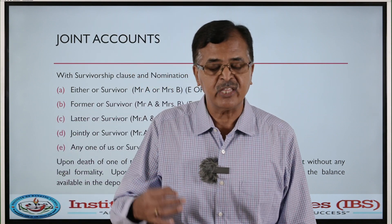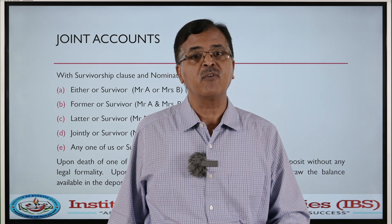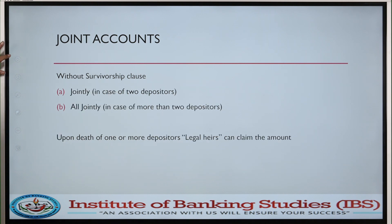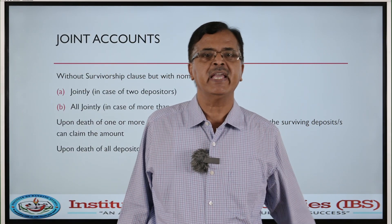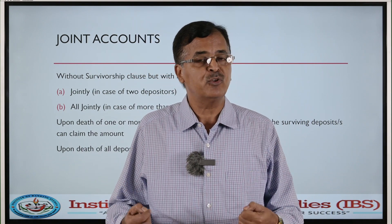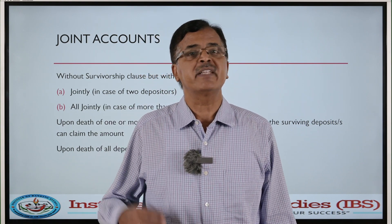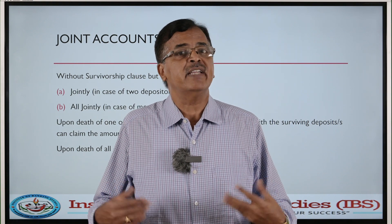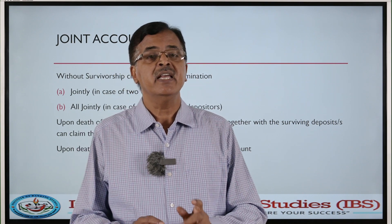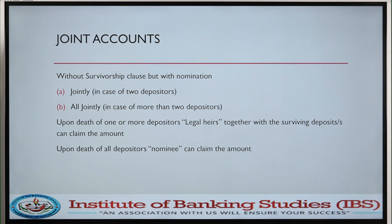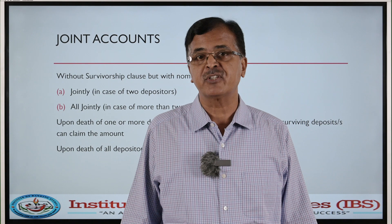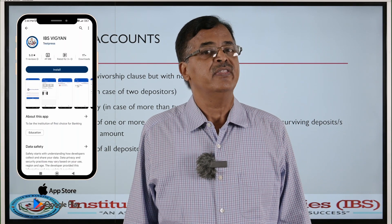In the case of a joint account without survivorship clause but with nomination, upon death of one or more depositors, the legal heirs together with the surviving depositor can claim the amount. For example, A and B opened a joint account without survivorship clause. If something happens to Mr. A, Mr. B is the surviving depositor but he alone cannot come and claim because there is no survivorship clause. The survivor along with the legal heirs of Mr. A has to approach the bank for getting the money back. And upon death of all the depositors, if there is a nomination, the nominee can come — but the nominee comes into the picture only after the death of all the depositors.